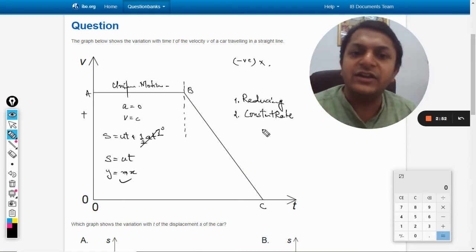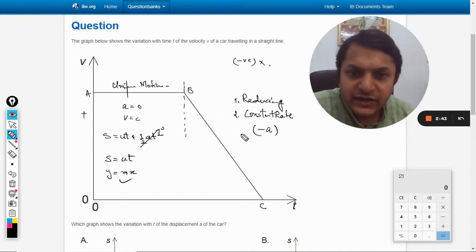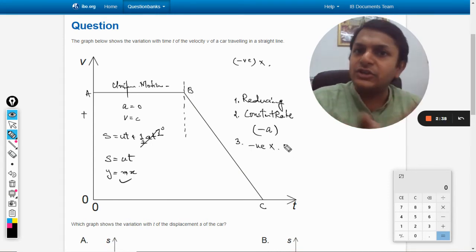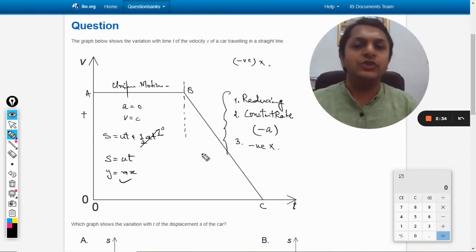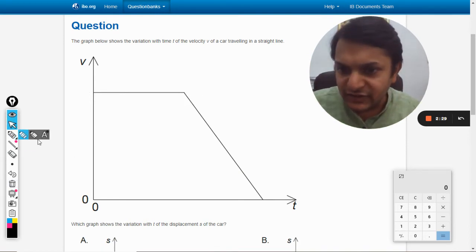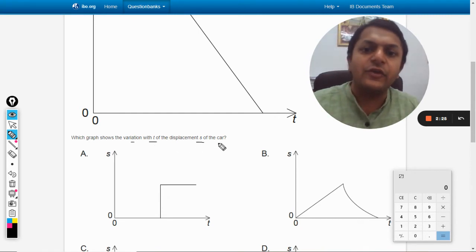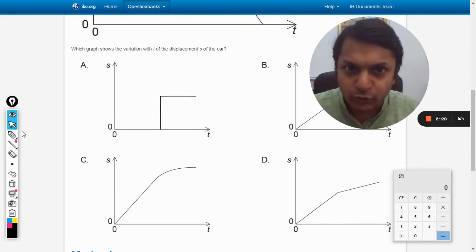So it is reducing at a constant rate, so acceleration or retardation is constant. Number three: the velocity is never becoming negative so it is not changing the direction. These are the three things that we now know. Let us now move to the options. What is the question wants us to say? This is about the understanding question now. Let us move: which graph shows the variation with t for the displacement? So as I have told you from the journey like from A to B.